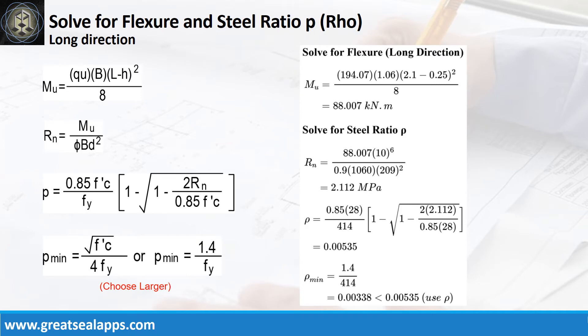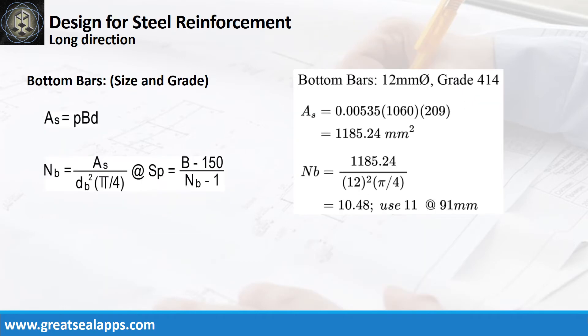At long direction, given ultimate soil pressure equals 194.07kPa, footing width equals 1.06m, footing length equals 2.1m, and column side equals 250mm, the maximum moment is 88.007kNm. Given resistance factor equals 0.9, B equals 1060mm, and D equals 209mm, the area of steel for long direction bars is 1,185.24 mm². The number of bars for 12mm bar is 11.